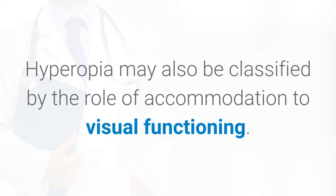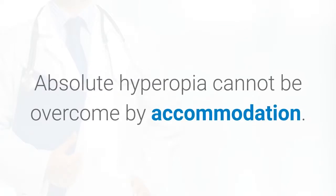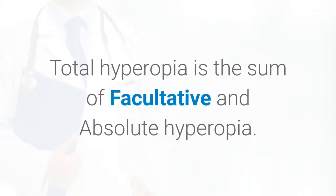Hyperopia may also be classified by the role of accommodation to visual functioning. Facultative hyperopia is hyperopia that can be overcome by accommodation whereas absolute hyperopia cannot be overcome by accommodation. Total hyperopia is the sum of facultative and absolute hyperopia.